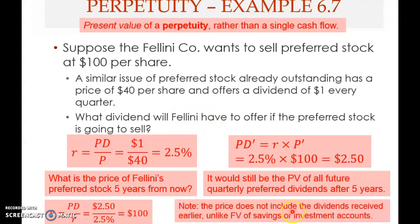An important note: this price does not include the dividends received earlier. Unlike a savings or investment account, this is a preferred stock. The one hundred dollars will only include dividends yet to be paid. In the future you will receive more dividends, but the present value of all remaining future dividends at any point in time will still be one hundred dollars. That is the idea behind this perpetuity.